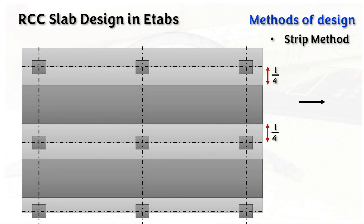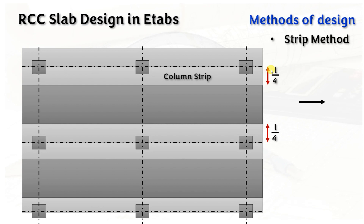Let's look into the strip method. If you take the slab layout, these are your columns and you have the slabs over here. The area connecting four columns — in this area you will have the slab, and this you have to design. In strip method, this is the column strip. The distance from the center of the column to the edge of the column strip is L/4, where L is the shorter dimension of the slab.